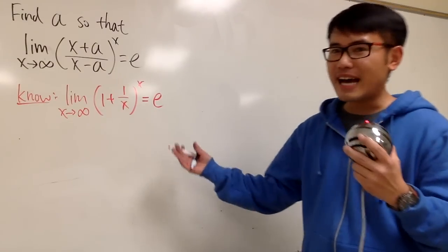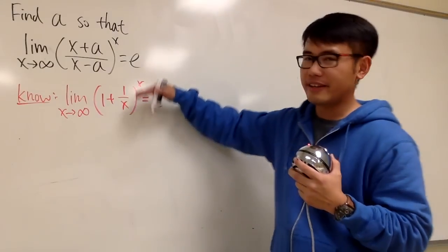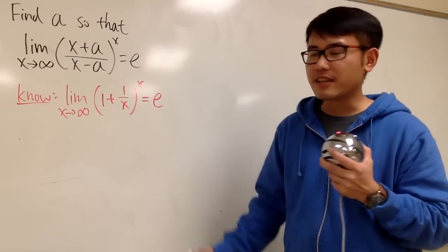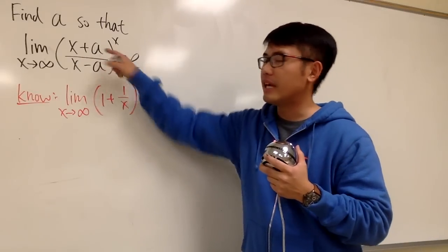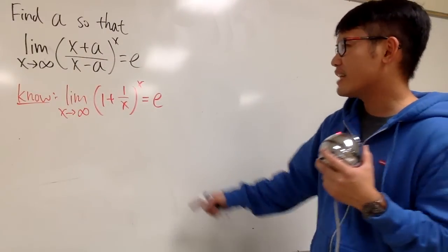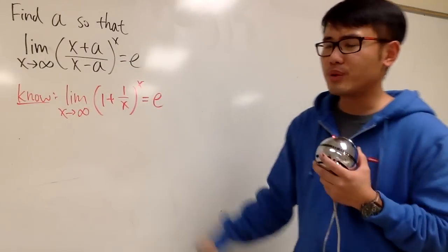So that's nice, and hopefully we can make some connection between this and that, and that way we can set up some condition, and that will help us to figure out the a value. But as I said, the insides are different, so what can we do?